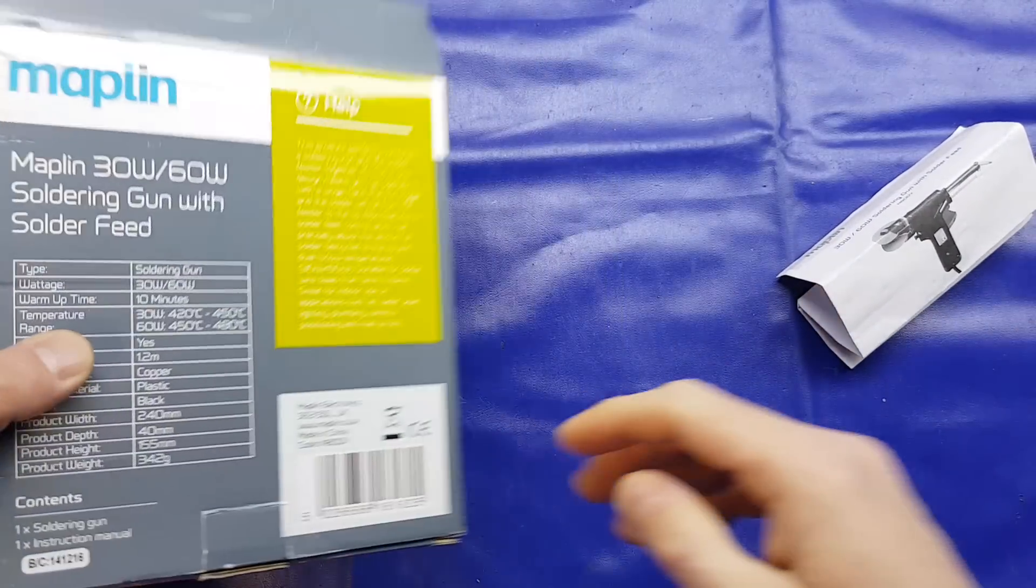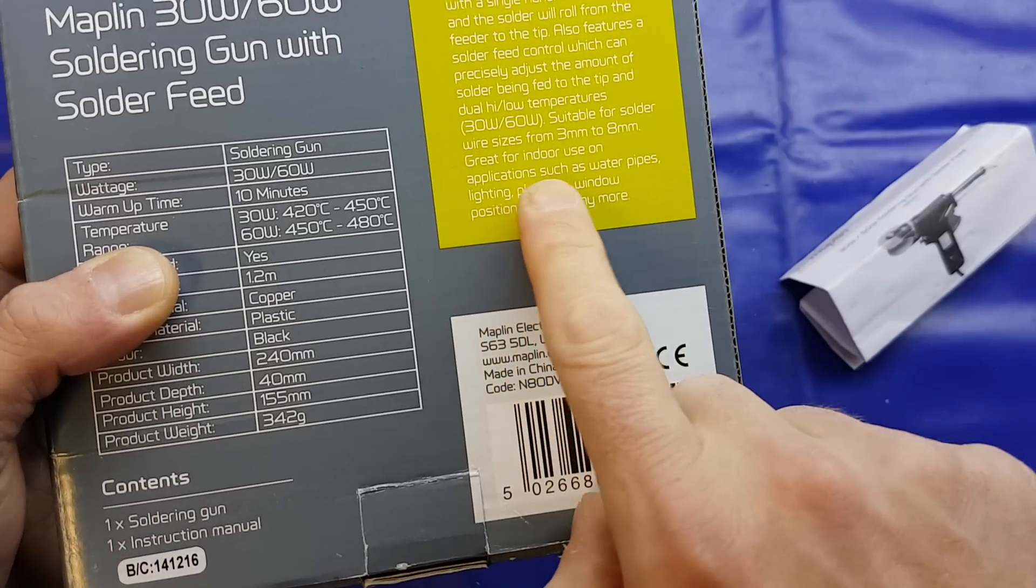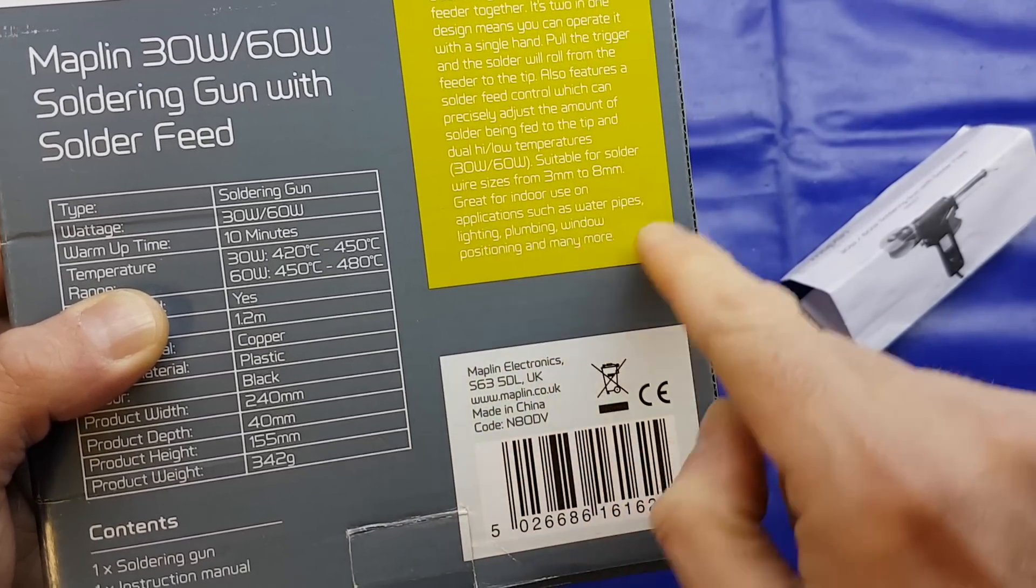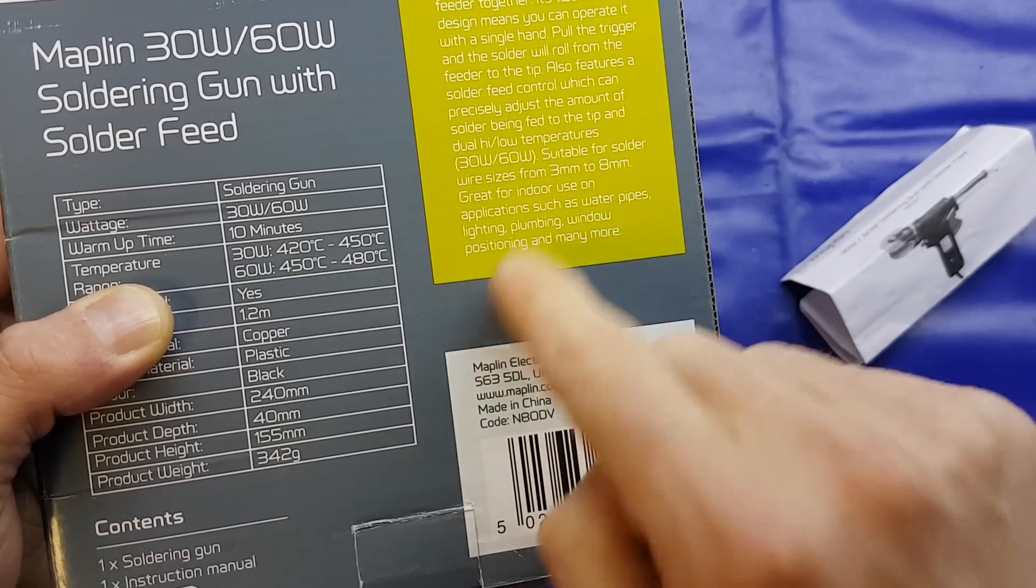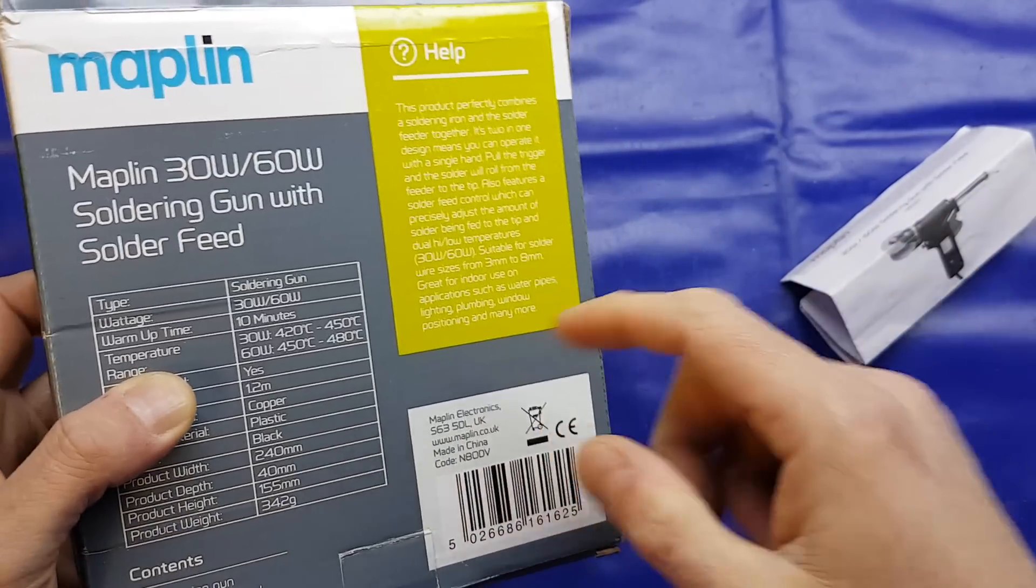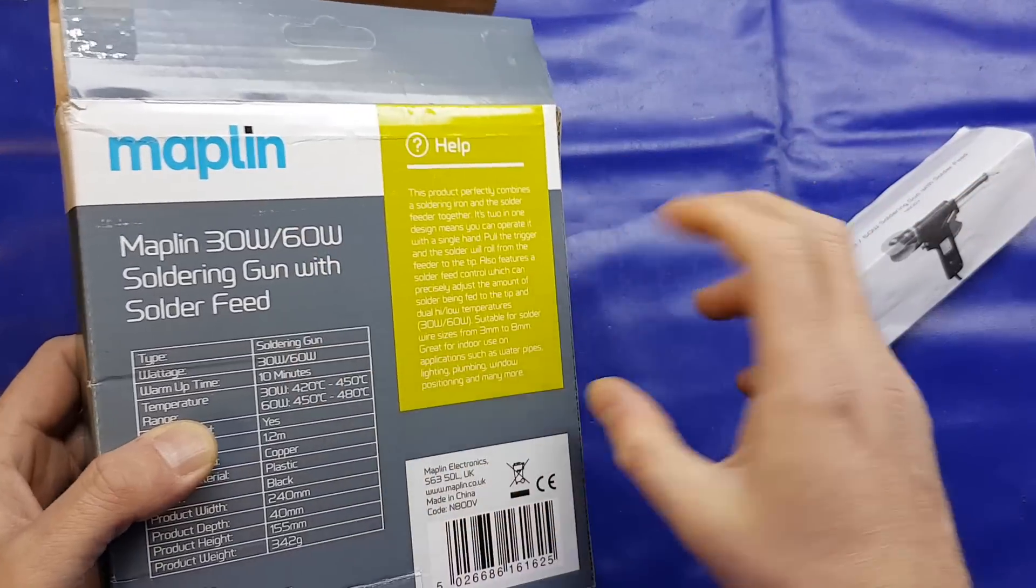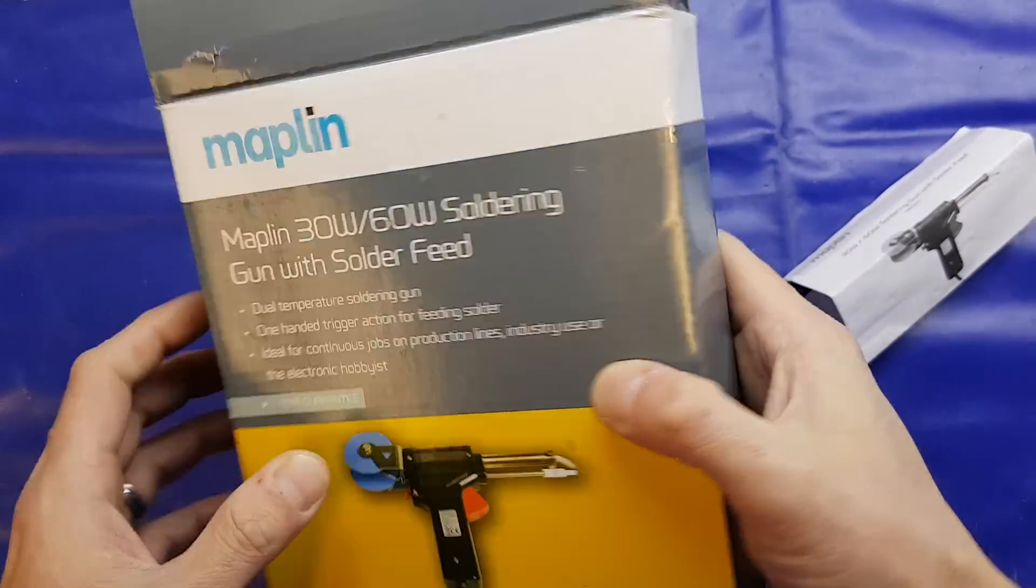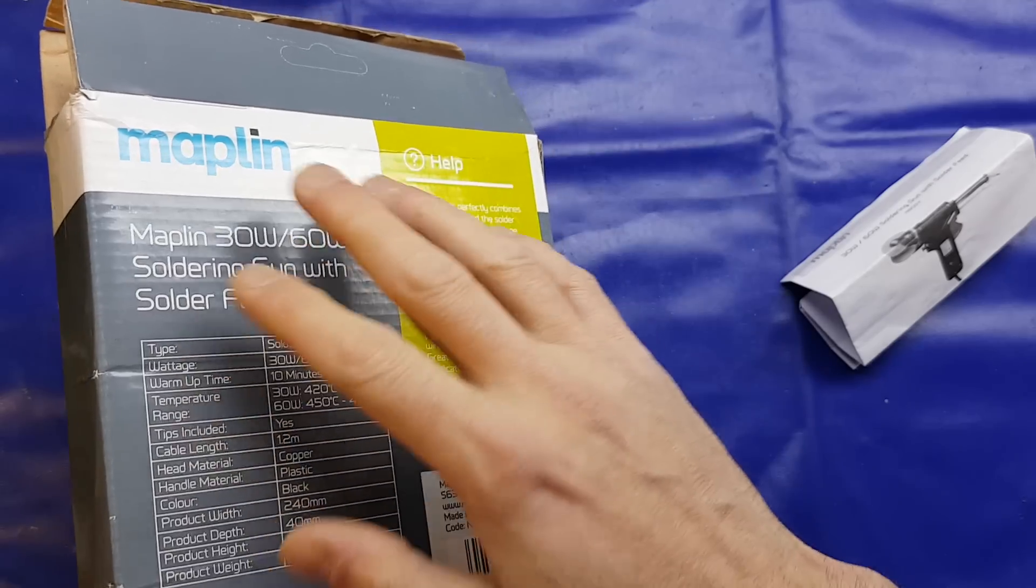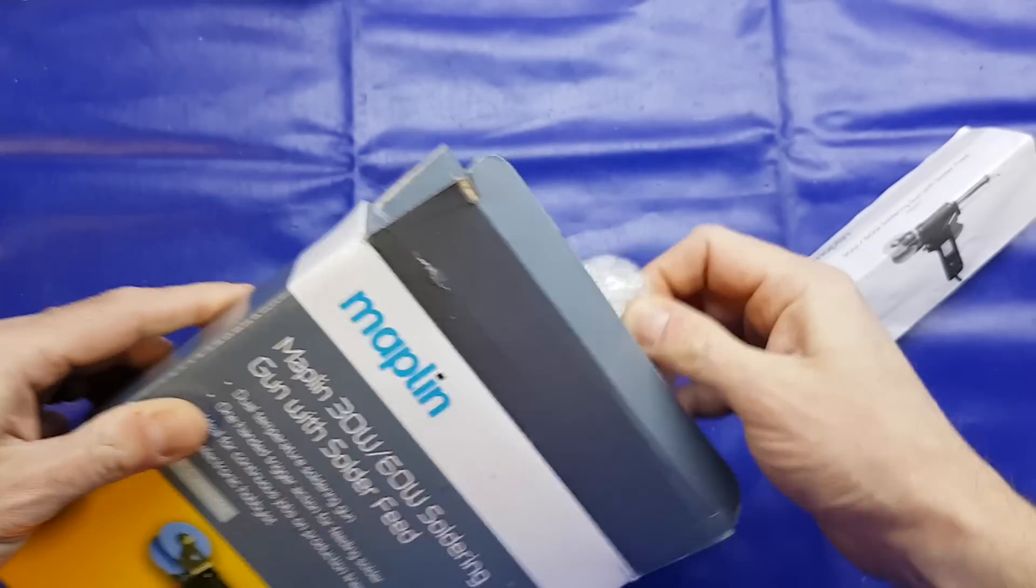It does say here, you can press the trigger to control the flowing capacity of solder wire from 3mm to 8mm in length at maximum. So it probably just means the 3 to 8mm means if you pull it a little bit, only 3 will come down. But then if you pull it in fully, then 8mm of solder will come out. Something I didn't tell you about on the back was some of the suitabilities they give you. Great for use on applications such as water pipes, lighting, plumbing. I thought water pipes would be encompassed by plumbing, but never mind. And window positioning. It's almost as if they've taken the generic Chinese model and basically transferred it directly onto the Maplin branded box.